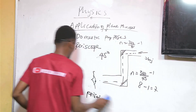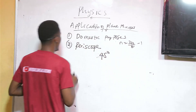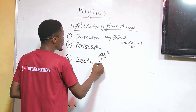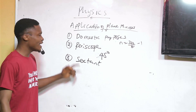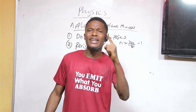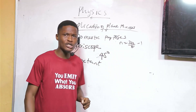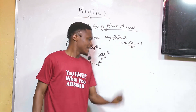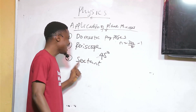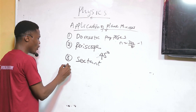Another application of plane mirrors is in what we call a sextant. A sextant is an optical device used for measuring the angle of elevation of the Sun. If you are trying to measure the angle of elevation of the Sun, the instrument you make use of is a sextant.